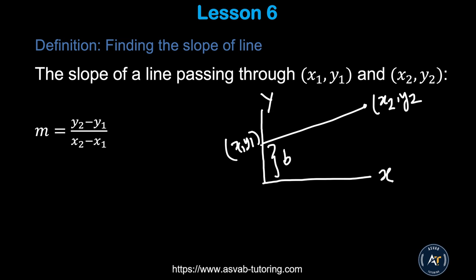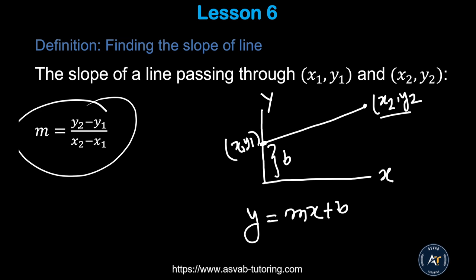First, we'll learn how to find the slope of a line. The equation of a line is y = mx + b, where b is the y-intercept — that means where it connects on the y-axis — and m is the slope. If you want to find the slope through points (x1, y1) and (x2, y2), you use the formula: slope m = (y2 − y1) / (x2 − x1).